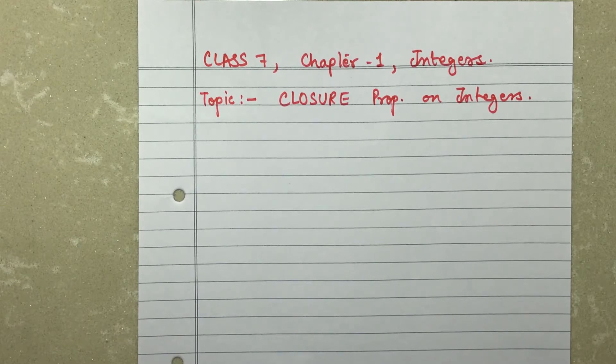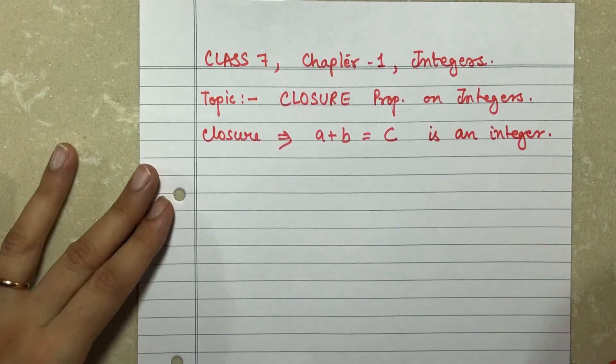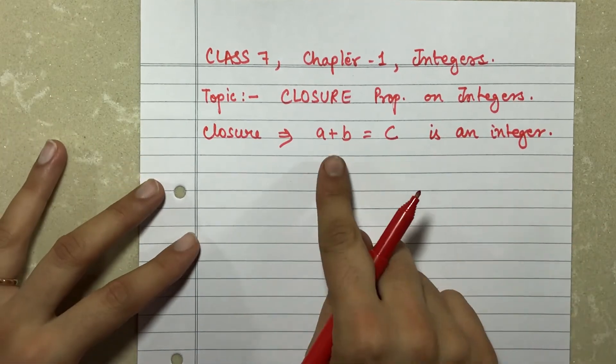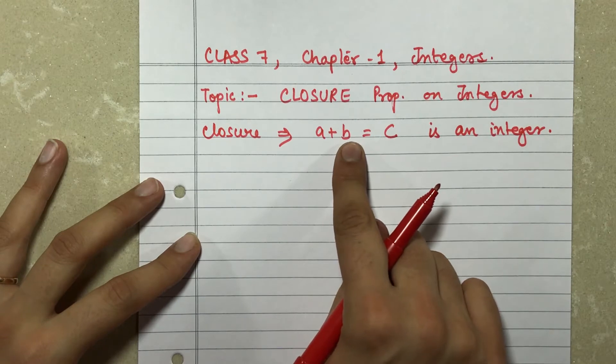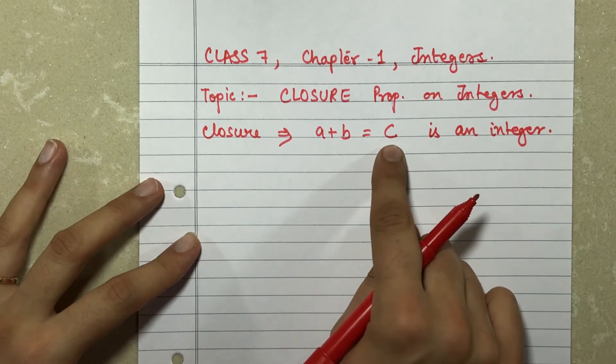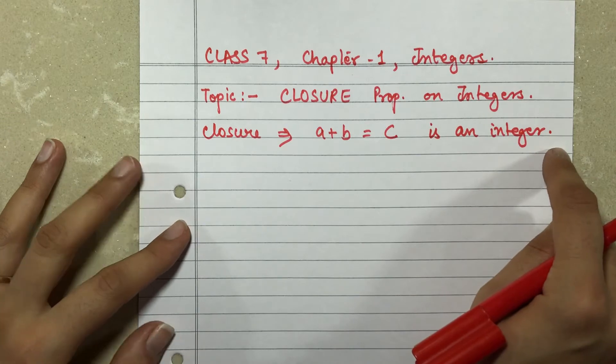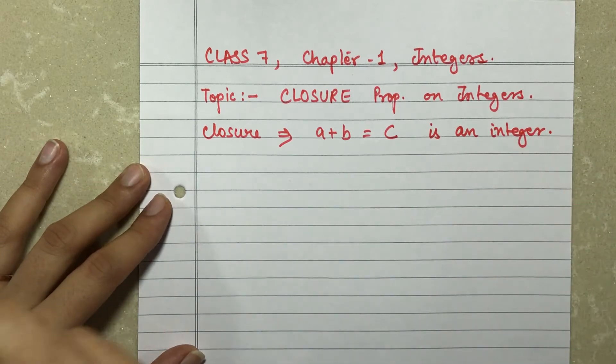So let's see the closure property. It explains that if I have two numbers and I add them, whatever the answer I'm getting should also be an integer. So let's check for addition.